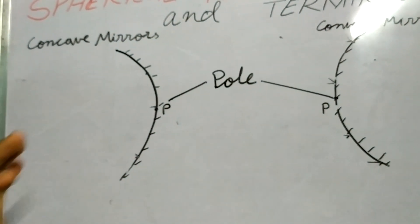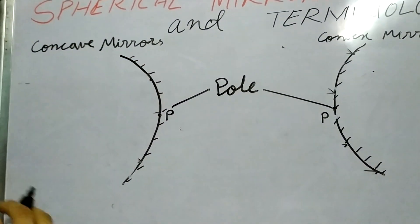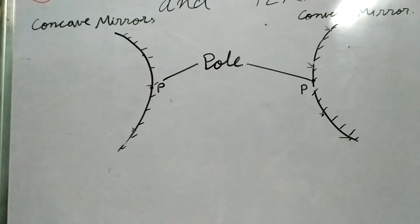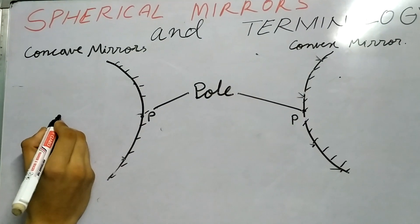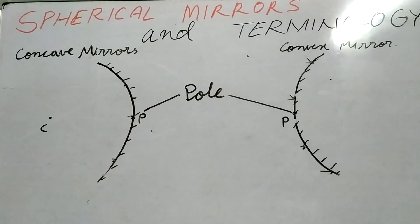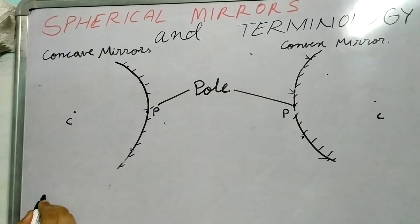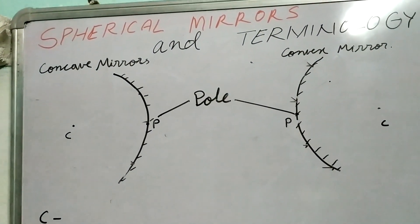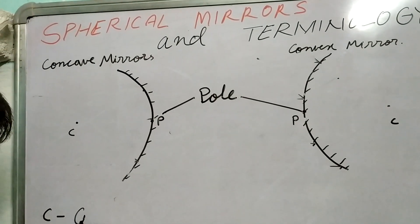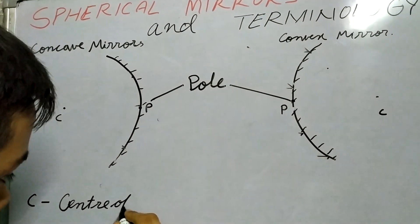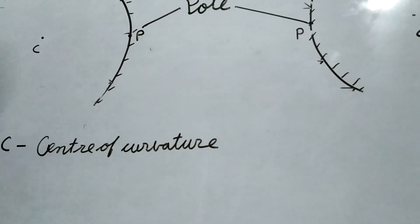This point is generally denoted as P and this is called the pole of a mirror. Now, I told you these mirrors are spherical, and these mirrors are made from a sphere. A sphere has a center. So, this mirror must have a center. We call this C, again, for a convex mirror. It will lie somewhere over there. This C is known as the center of curvature.